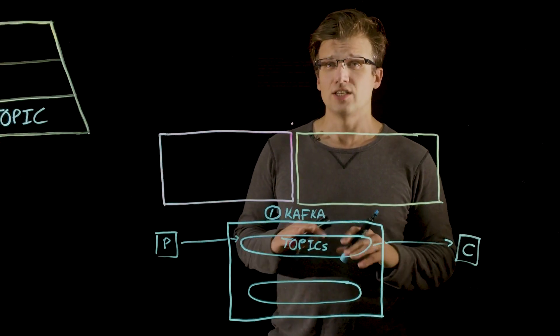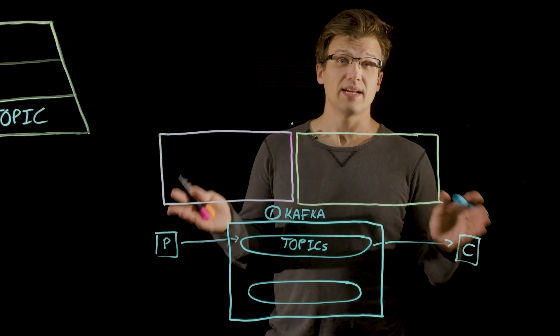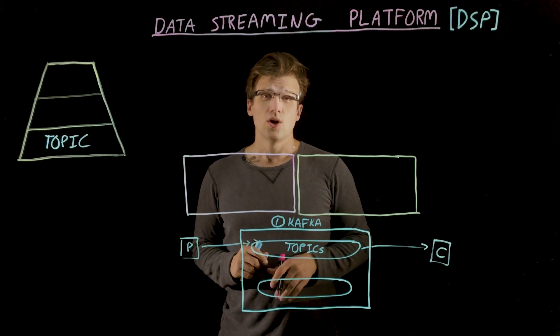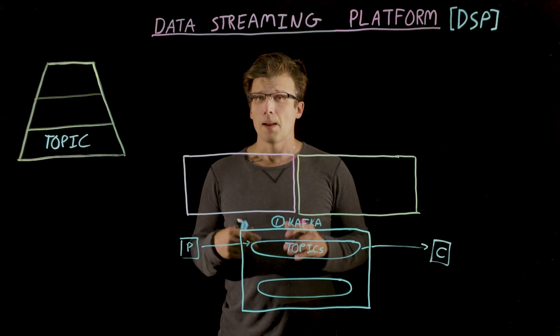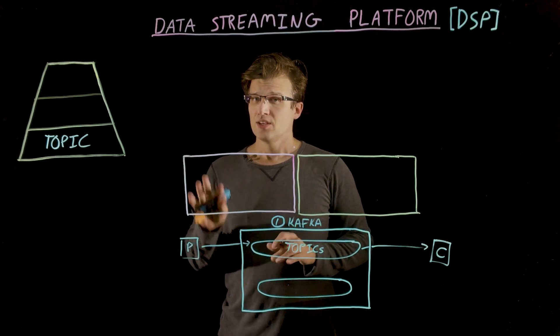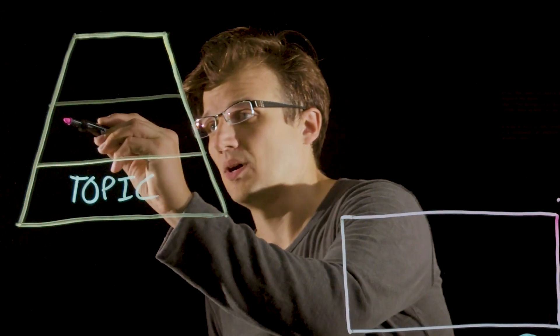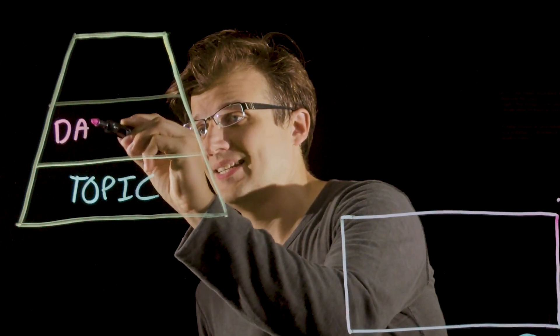Kafka doesn't have any notion of content. It's just bytes in and bytes out. But plain bytes leave a lot of room for error. We need structure and meaning beyond the basic topic. So this brings us to the second layer of our data model, which is the data stream.